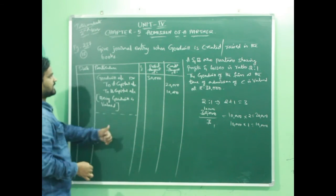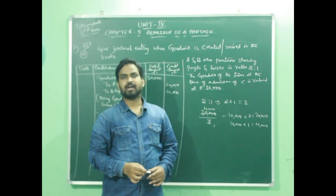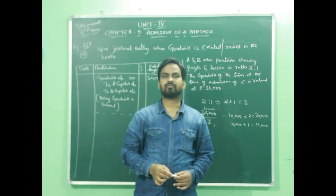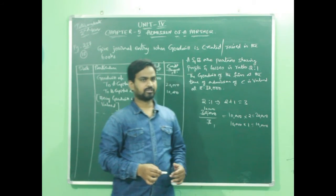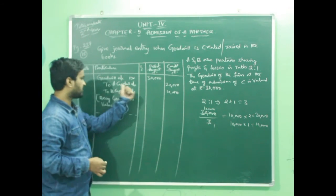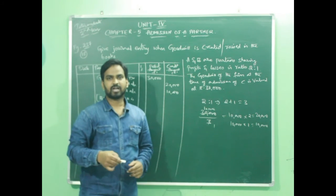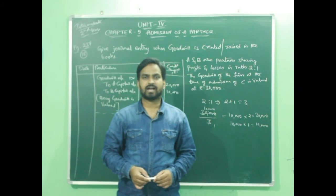And remember that when goodwill is valued it will appear in asset side of the balance sheet. The general entry is goodwill account debit to A capital account, B capital account. Then goodwill will also be shown in new balance sheet asset side.